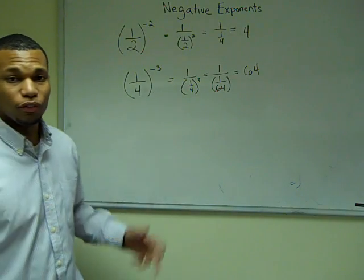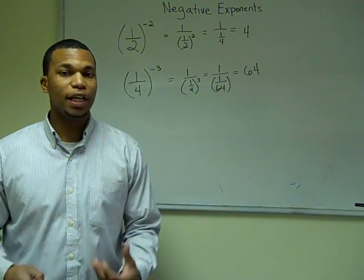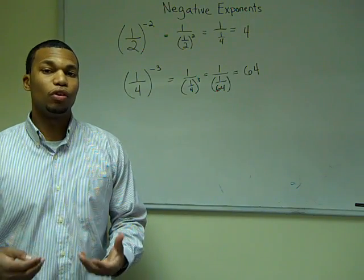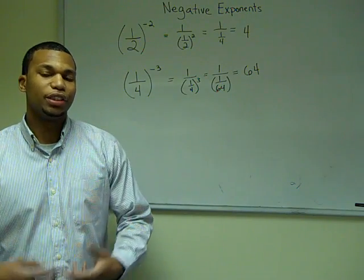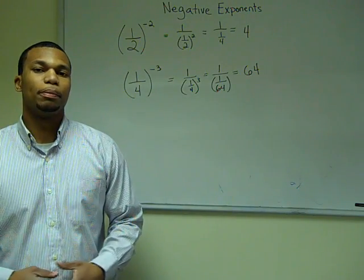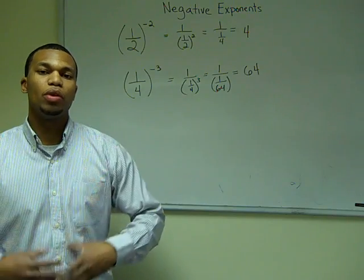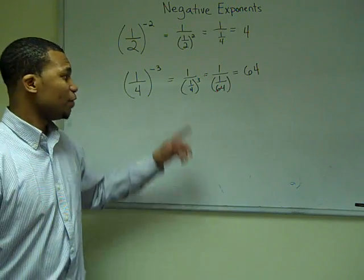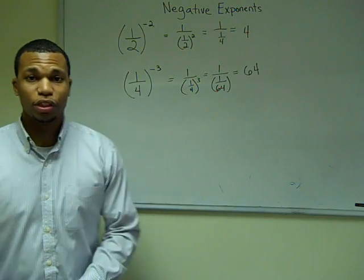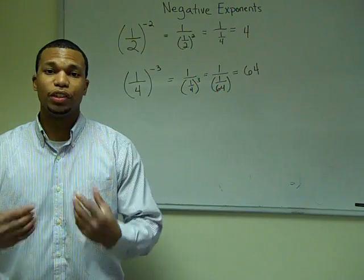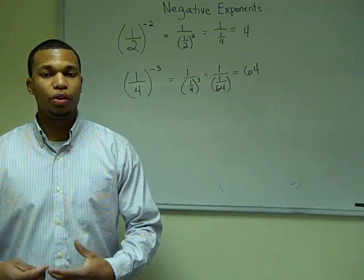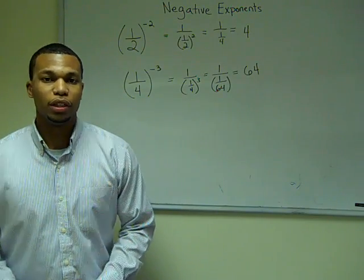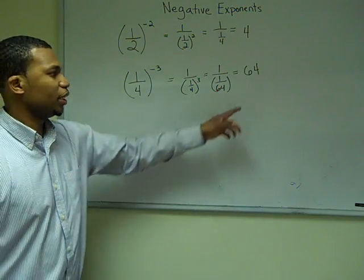The same with one fourth raised to the negative third power. First let's find one fourth raised to the third power, which is one over 64. Since I have a negative exponent, I find the reciprocal. The reciprocal of one over 64 is 64.